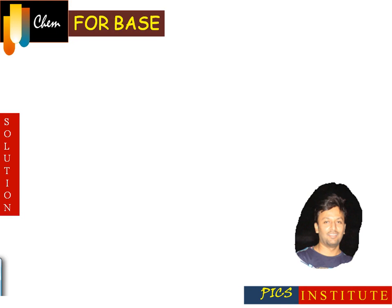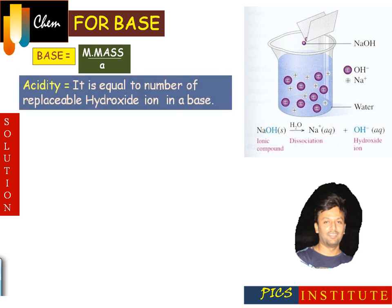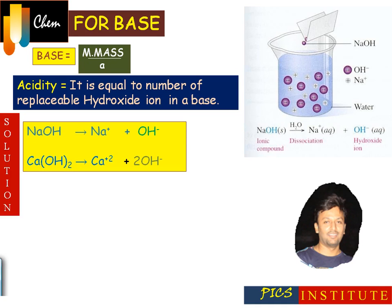For a base, equivalent mass is equal to molecular mass divided by acidity. Acidity may be defined as the number of replaceable hydroxide (OH) ions in a base molecule. For example, in the case of NaOH, acidity is 1, and in the case of calcium hydroxide, acidity is 2.